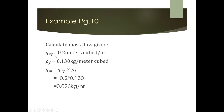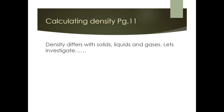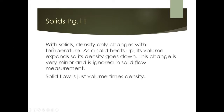Density is the key pivot point when distinguishing volumetric flow from mass flow. For solids, density only changes with temperature — as a solid heats up its volume expands and density goes down. This effect is very minor and is generally ignored in solid flow measurements, so solid flow is simply volume times density.